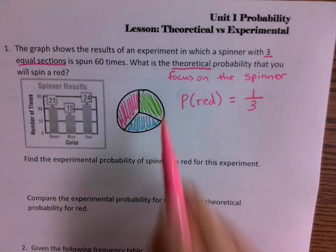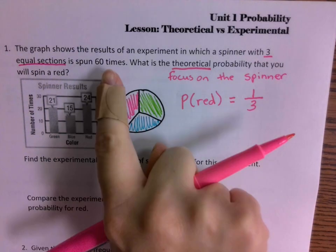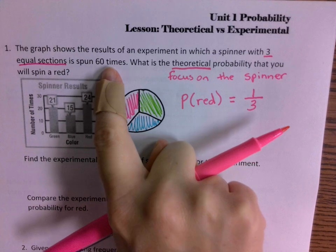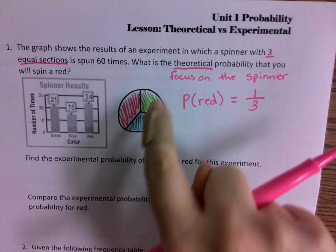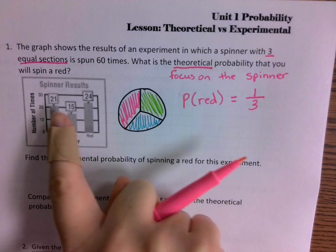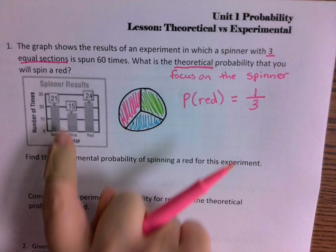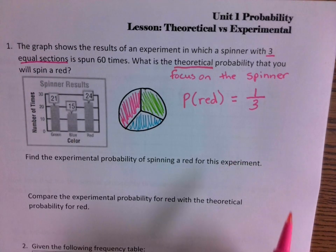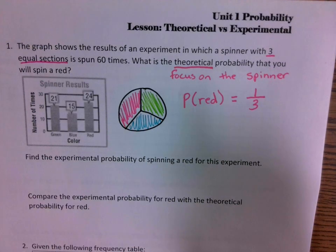In theory, if I spin this three-equal-section spinner, I should land on red one third of the time, blue one third of the time, and green one third of the time. What's one third of 60? Twenty — so it should be 20, 20, 20. Now look at the experiment: is it 20, 20, 20? No — I got 21, 15, and 24. So my experimental probability is going to be different from my theoretical probability.